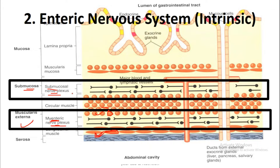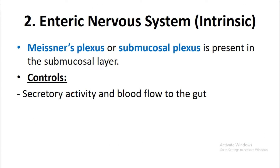The Meissner's plexus, or submucosal plexus, is present in the submucosal layer. It controls secretory activity and blood flow to the gastrointestinal tract. Stimulation of the submucosal plexus controls the secretory activity and blood flow to the gut.